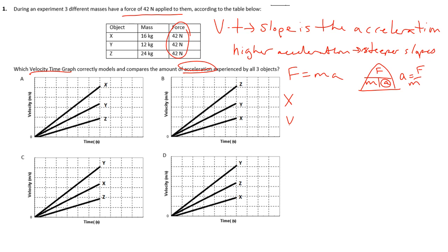Alright, so we've got object x, y, and z. For all of those, we will use that relationship of a equals F over m to solve for the acceleration. So here for x, we'll have a force of 42 newtons divided by 16 kilograms.